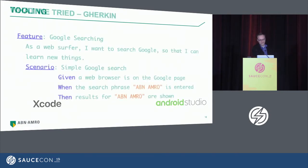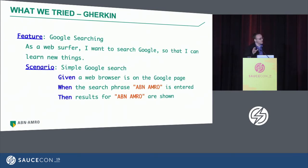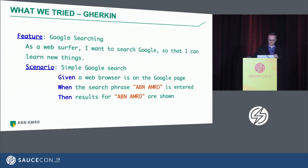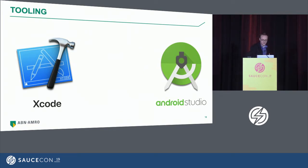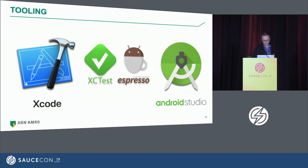Even though it looks like English, it is very strict — you cannot change a phrase a little bit and pretend it's still working. You need to be as strict as when you code. Our developers are using Xcode and Android Studio. The nice thing is that Xcode and Android Studio come with XCTest and Espresso — they are integrated and are a complete part of the development.